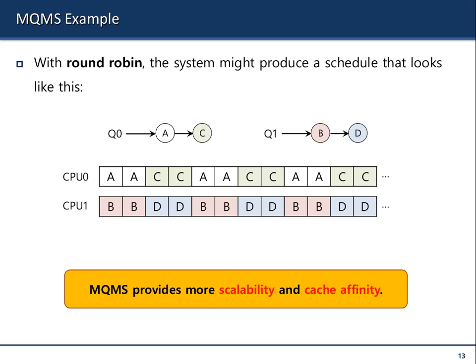For example, if you have a round-robin scheduler with a time slice, it's possible to create a schedule like this. For queue zero — meaning processes that will run on CPU zero — this will be the schedule. For queue one — processes that will run on CPU one — this will be the procedure. It provides more scalability: if you add more CPUs, you simply add more queues. And for cache affinity, you know all these processes will just stay here, so both the data for A and C can be loaded to the CPU cache, preventing problems with cache affinity.